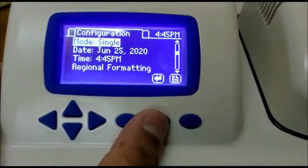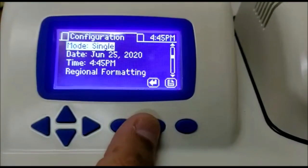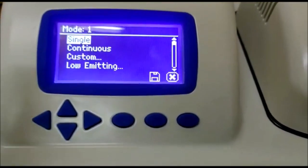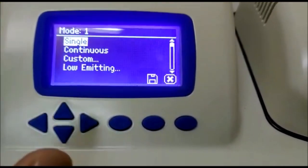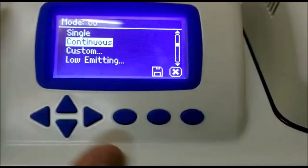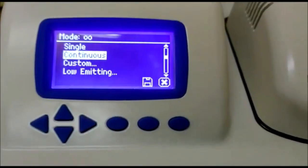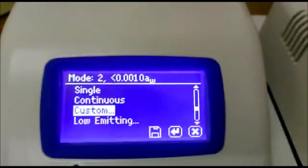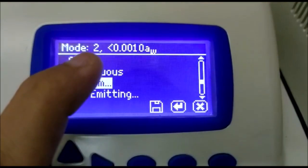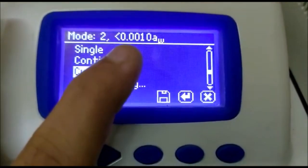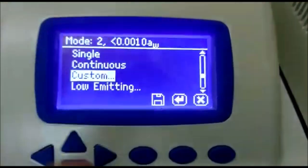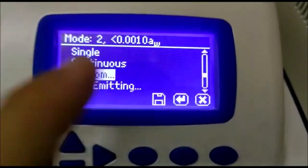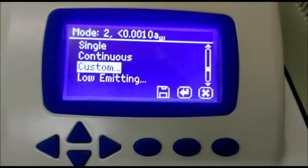Here you can select the mode of testing. We have different modes of testing. Like single, it means you have to do a single test. Generally we do this only. In continuous, it will keep on doing the test until you open the test. In custom mode you can select that my two consecutive readings should be in the range of 0.001. It will keep on repeating the test until it gets a difference of 0.001 in the two consecutive testing.